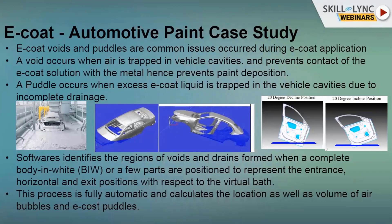Puddles or drainage occur when there is excess e-coat liquid trapped in vehicle cavities when the vehicle moves out of the tank solution, due to improper design. For example, in a hood or bonnet, the inner and outer panels have surfaces where the paint solution remains stable even when the vehicle comes out of the tank horizontally - this creates a puddle. We can identify these virtually with visualization software, and similarly identify air bubble voids.